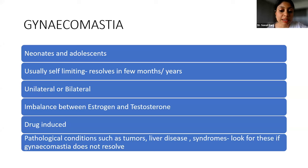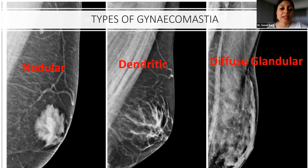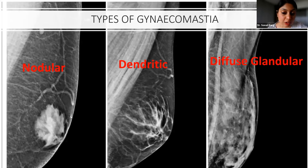It may be drug-induced, and when you have ruled out all these normal conditions, then pathological conditions like tumors, liver disease, and syndromes need to be looked for if you find that the gynecomastia is abnormal or pathological. I want to highlight again that a mammogram is never ever done in the pediatric age group, but I have put this up as a graphic presentation of the three different types of gynecomastia recognized in adult males.